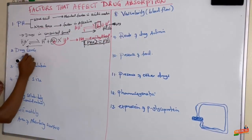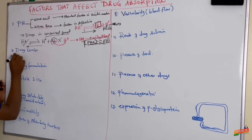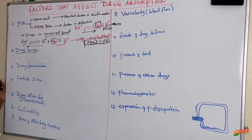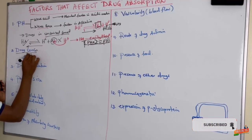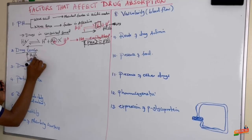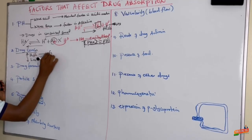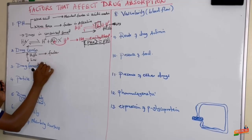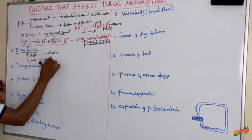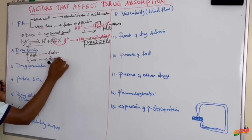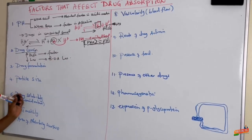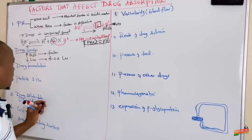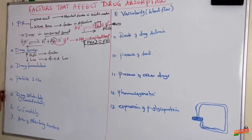Another factor is drug concentration. When the concentration of the drug is high, faster is the rate of absorption; and when it is low, the rate of drug absorption is also low. So higher-concentrated drugs are absorbed faster compared to low-concentrated drugs.